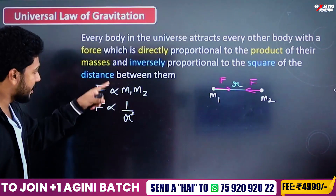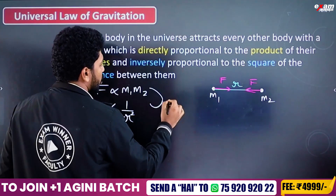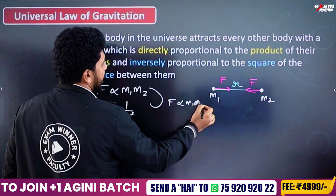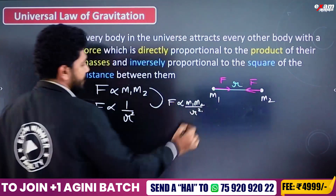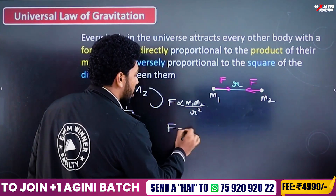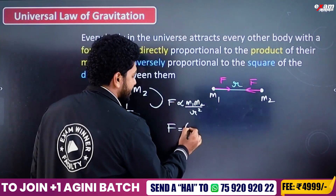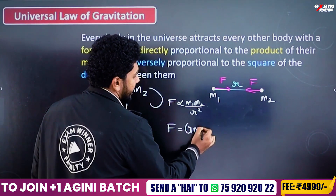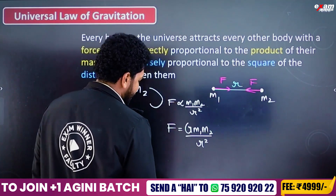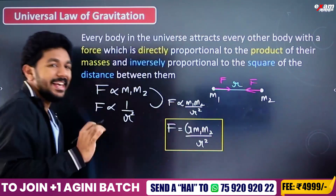If we combine these two proportionalities — force is directly proportional to the product of the two masses, and inversely proportional to the square of the distance — then force is equal to a constant G multiplied by M1 times M2 divided by R squared. This is Newton's Law of Gravitation equation.